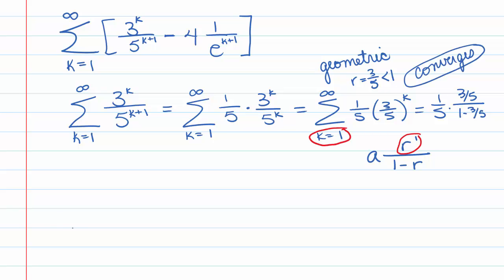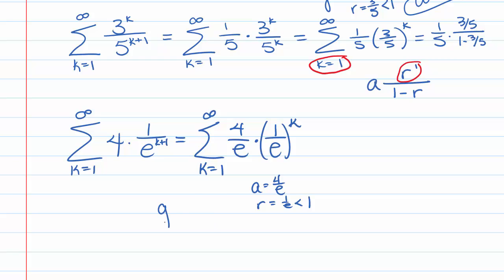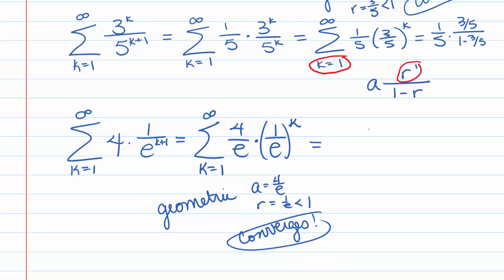Now let's look at the other series: the sum k equals 1 to infinity of 4 times 1 over e to the k plus 1. This is also a geometric series. We can rewrite it as the sum k equals 1 to infinity of 4/e times (1/e) to the k. So a equals 4/e and r equals 1/e, which is less than 1, so it converges. It converges to 4/e times (1/e) over 1 minus 1/e, since we're starting at k equals 1.